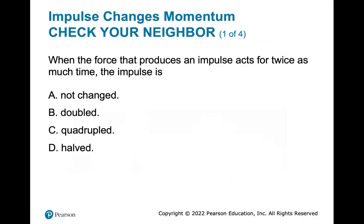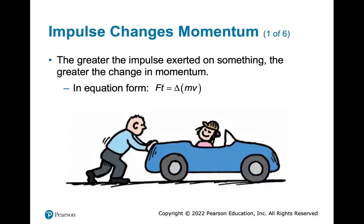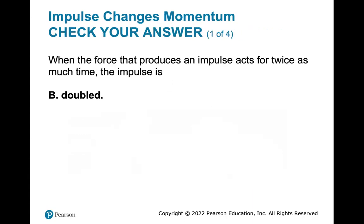When the force that produces an impulse acts for twice as much time, the impulse is doubled. Looking at the equation — it's force times time, there's no squared term and no denominator. So if you double the time, you double the change in momentum. The answer is: it doubles.